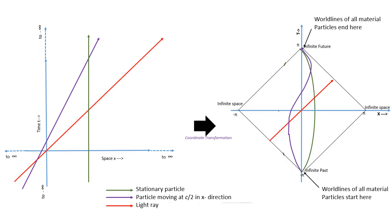The world line, shown in red, is a ray of light which moves at 45 degrees in both the original diagram and the Penrose diagram.